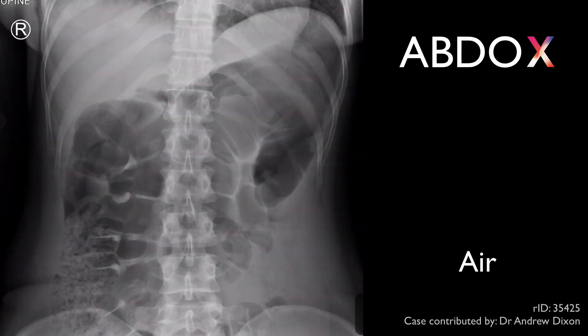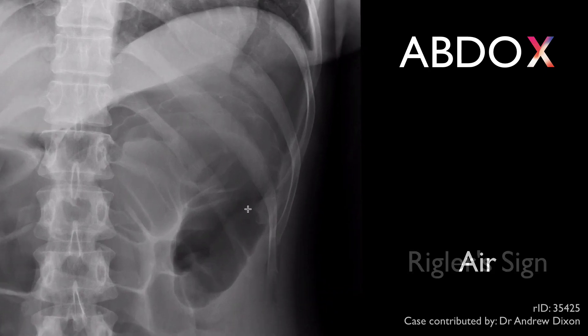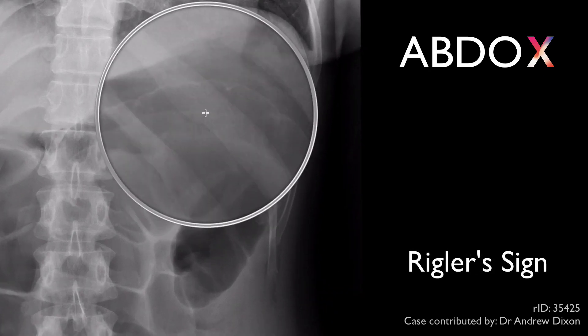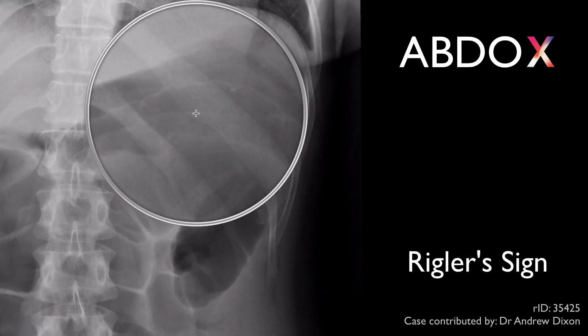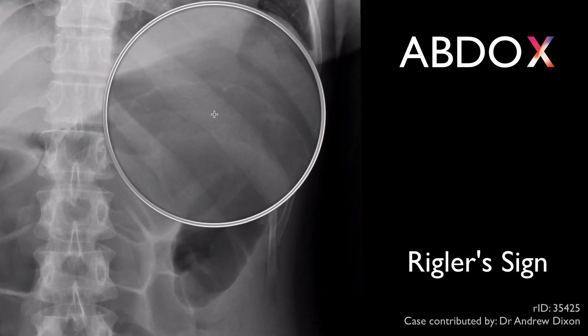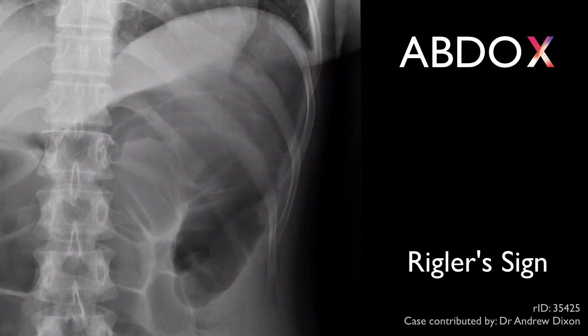Various signs of free intraperitoneal air exist, such as Riggler's sign. Here, the bowel wall can be seen very clearly. This is because there is free gas on both the inside and outside of the bowel wall.